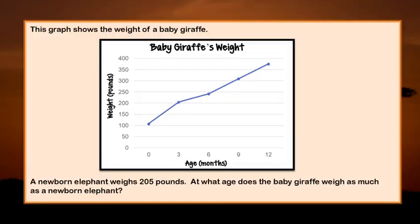Let's look at this example. This graph shows the weight of a baby giraffe. A newborn elephant weighs 205 pounds — at what age does the baby giraffe weigh as much as a newborn elephant? So let's see: 205 pounds would be closest to 200, but a little bit over. And that happens right here, which is at 3 months. So the answer must be 3 months.